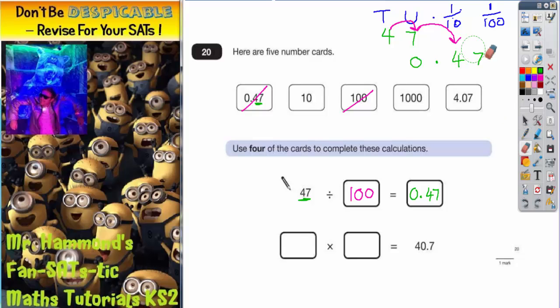Now let's look at the next part of the question. I've got something multiplied by something gives me 40.7. Well, I know that I've got 407 here and I've also got 407 here. So I'm going to choose this one to be one of these cards. It doesn't really matter which because it's multiplied, but I'm going to put it at the start.